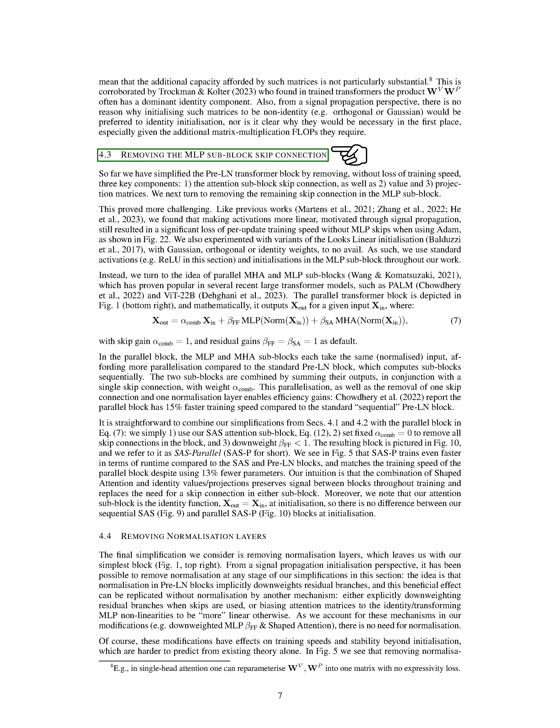In this section, we discuss how we further simplified the pre-LN transformer block by eliminating the skip connection in the MLP sub-block. This was a more complex task. We discovered that making the activations more linear, as suggested by signal propagation theory, led to a significant decrease in training speed per update when we didn't use MLP skips and used the AdamW optimizer. We tried different initialization methods, such as the looks-linear initialization with Gaussian, orthogonal, or identity weights, but none of them worked. Therefore, we decided to use standard activations, like ReLU, and standard initializations in the MLP sub-block throughout our work.